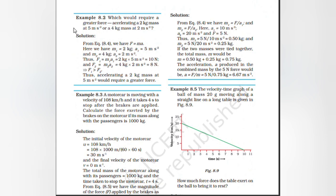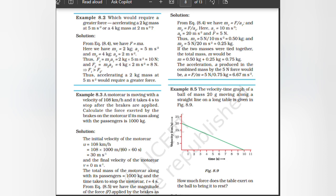Which would require a greater force: accelerating a 2 kg mass at 5 m/s², or a 4 kg mass at 2 m/s²? Using F = ma: F₁ = 2 kg × 5 m/s² = 10 N; F₂ = 4 kg × 2 m/s² = 8 N. Since F₁ > F₂, accelerating a 2 kg mass at 5 m/s² would require a greater force.